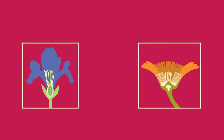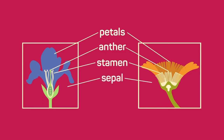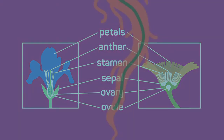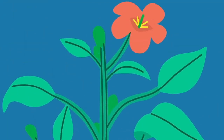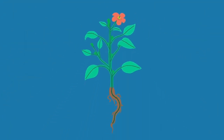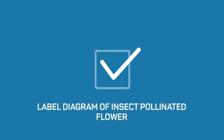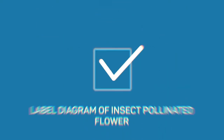See if you can identify the parts on these slightly different flowers. Check your answers now. In this video you have learned about the different structures of a plant. You should now be able to label a diagram of a plant and an insect-pollinated flower.